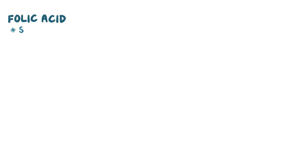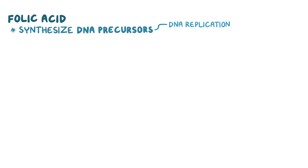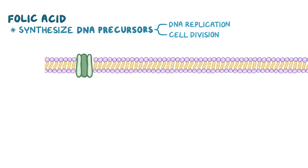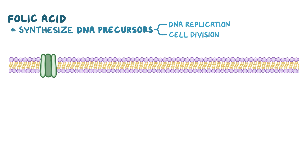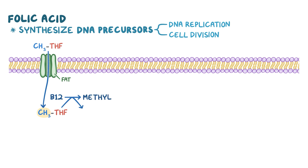Folic acid is used to synthesize DNA precursors, which is essential for DNA replication and cell division. On target cells, there's a specialized membrane protein called folic acid transporter, or FAT, which moves the circulating methyl-THF inside the cell. Once inside, methyl-THF transfers its methyl group to vitamin B12, ultimately making methylcobalamin and free THF in the process.